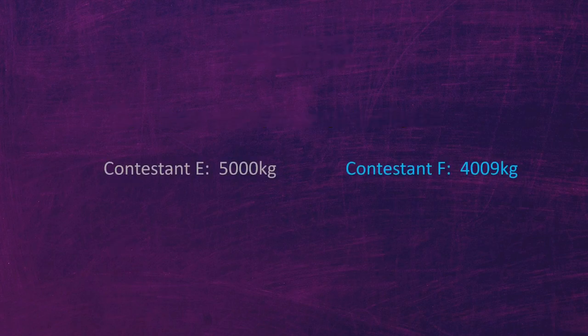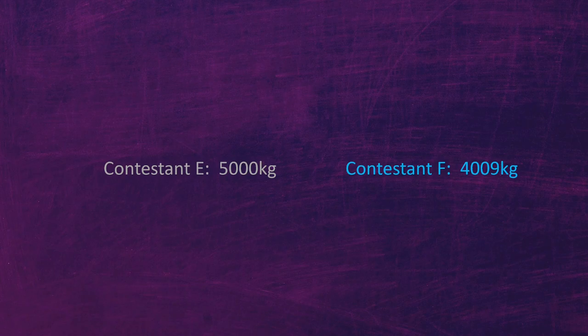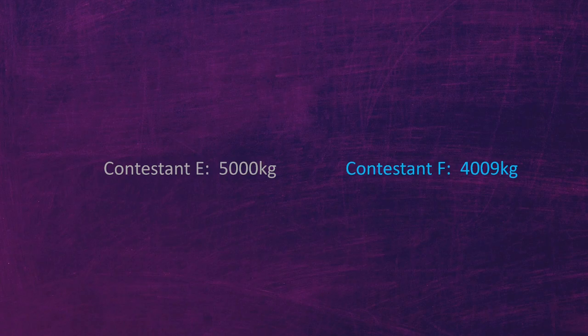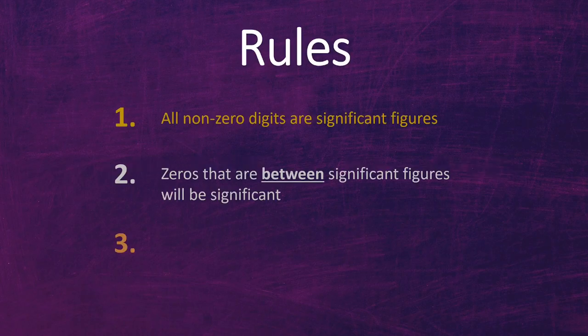To fully understand rule 2, let's pretend there is a similar game with a different sized elephant. This time there are only 2 contestants, one of whom knows the actual weight. Contestant E guesses 5,000 kilograms, whereas contestant F guesses 4,009 kilograms. Since all digits from 1 to 9 are significant, that 9 at the very end is significant and represents confidence. So because contestant F is confident in his last digit of 9 and first digit of 4, it would make sense he's confident in the numbers in between. Which means the zeros between the 4 and 9 are automatically significant. That brings us to rule 2: zeros that are between significant figures will automatically be significant.